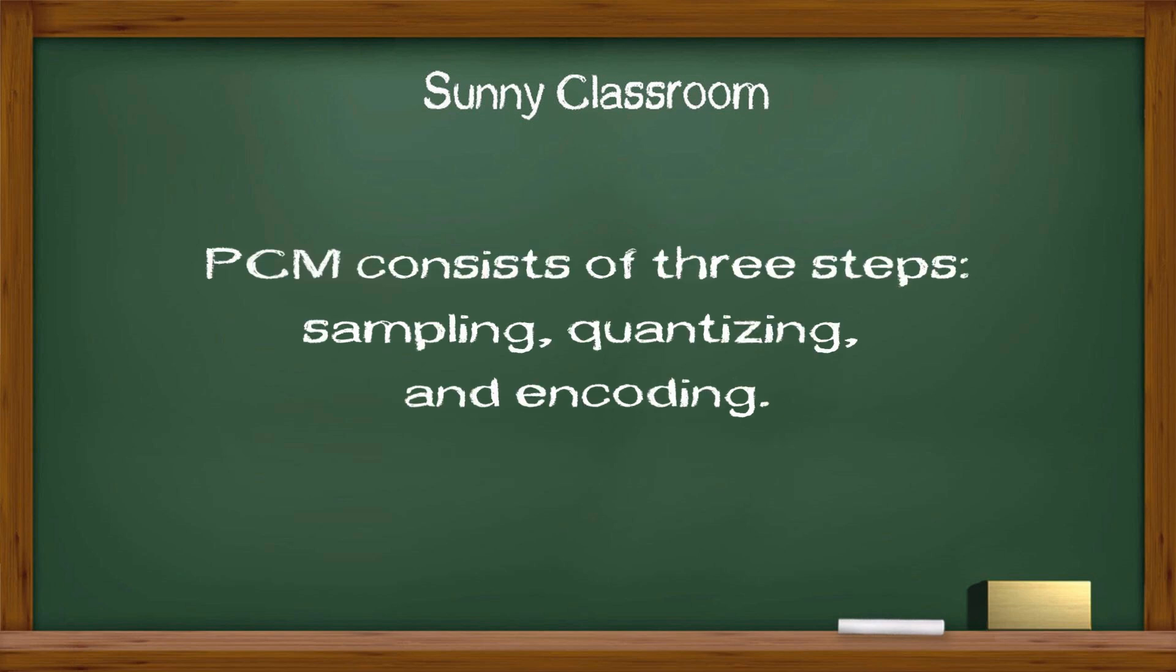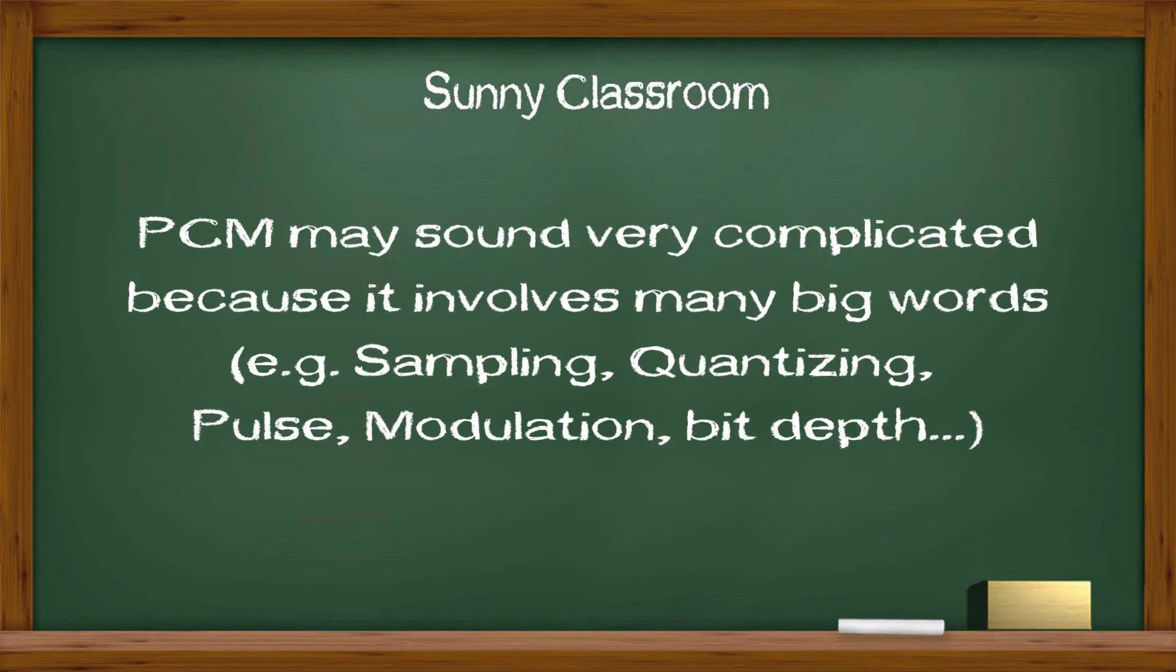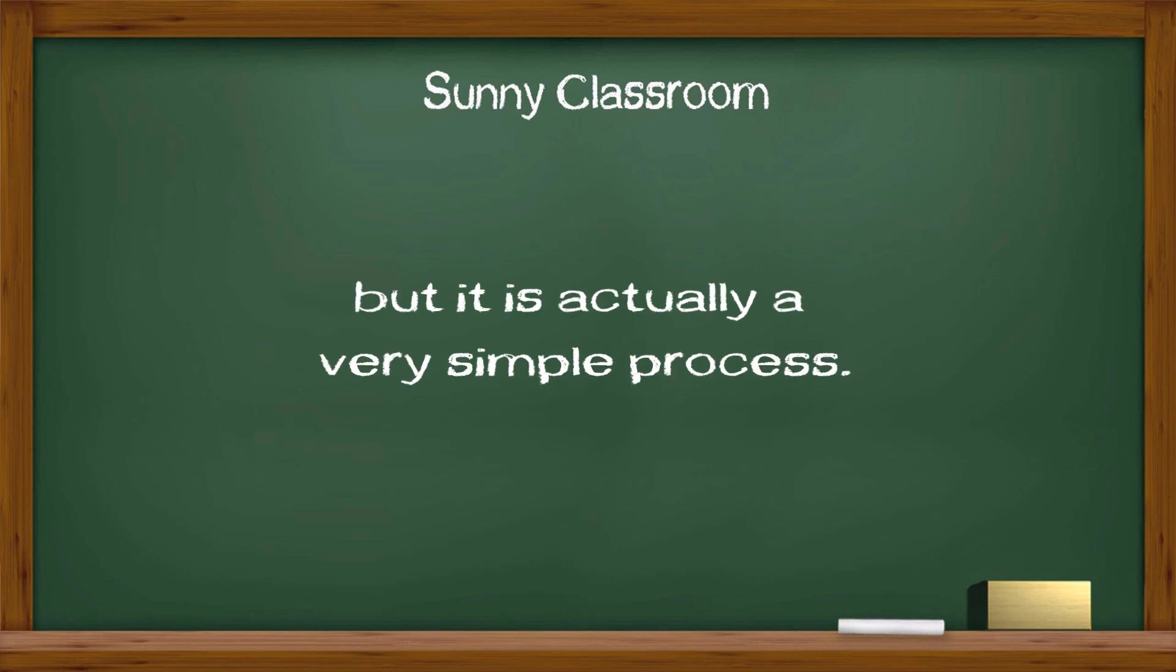PCM consists of three steps: sampling, quantizing, and encoding. PCM may sound very complicated because it involves many big words, but it's actually a very simple process.